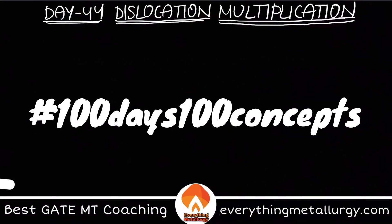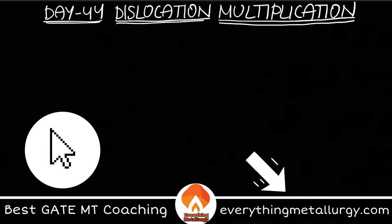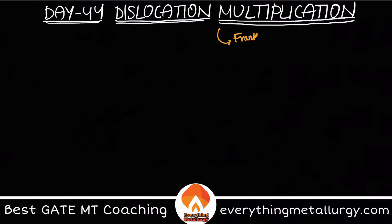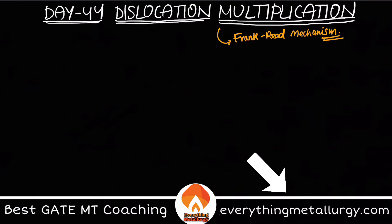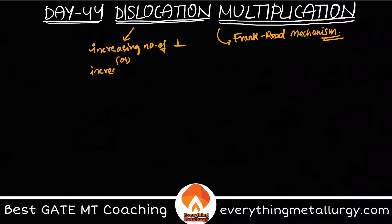Hello guys, welcome to Everything Metallurgy. Welcome to Day 44 of 100 Days 100 Concepts. Today I am going to explain dislocation multiplication, or basically the Frank-Read mechanism. So what is dislocation multiplication? Basically, it means multiplying the number of dislocations — that means increasing the number of dislocations.